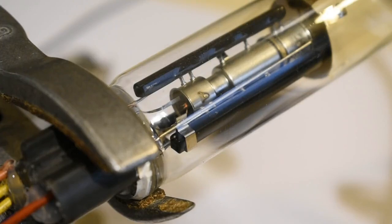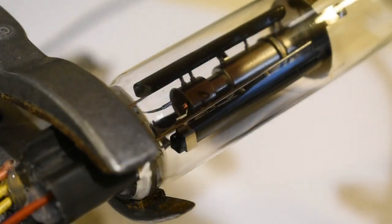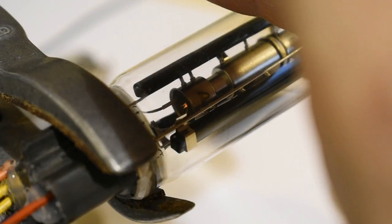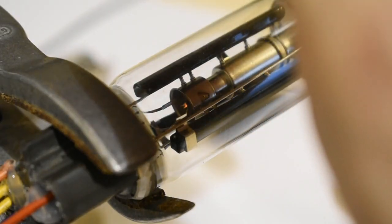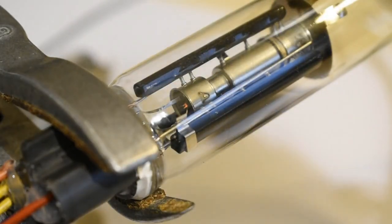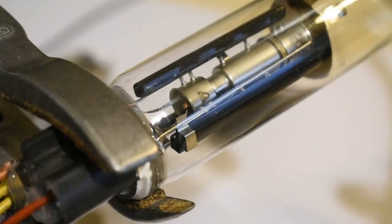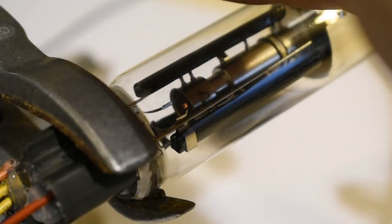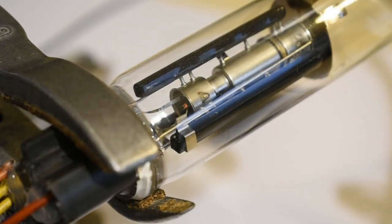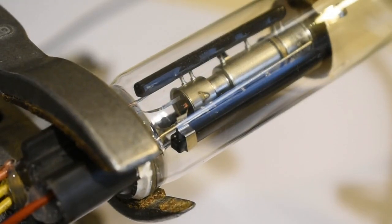Here we have the electron gun all connected up. You can possibly just make out the glow from the heater. That heater is running at 9 volts as opposed to 6.3, which it's supposed to be running at, but it seems to be very dim at 6.3. The output is also very weak.